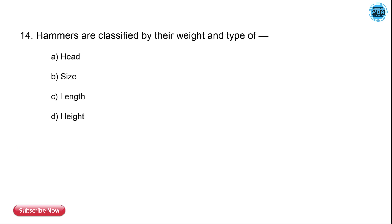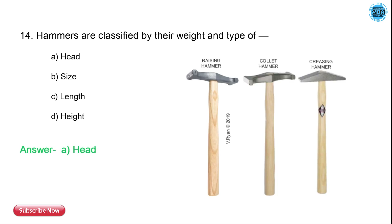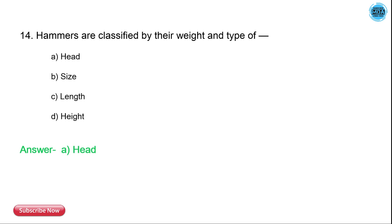The 14th question is: hammers are classified by their weight and the type of what? The options are head size, length, and height. The correct answer is head — hammers are classified by their weight and the type of head.